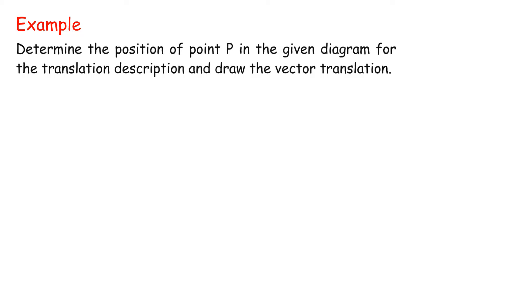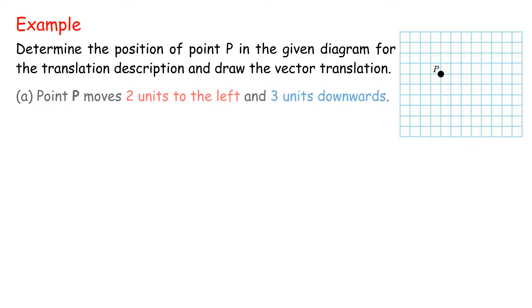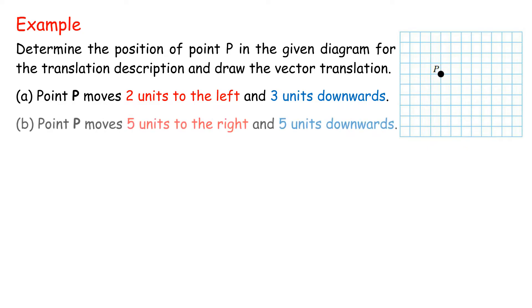Example: Determine the position of point P in the given diagram for the translation description, and draw the vector translation. A. Point P moves two units to the left and three units downwards. B. Point P moves five units to the right and five units downwards.